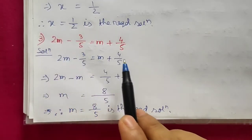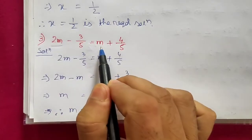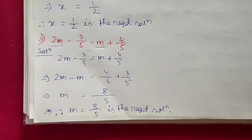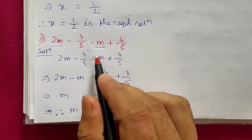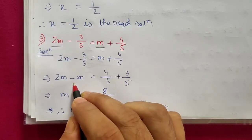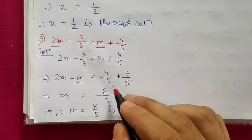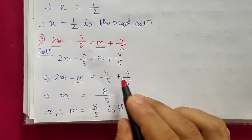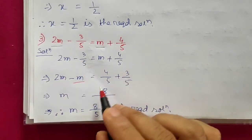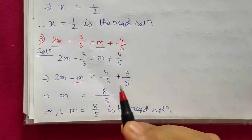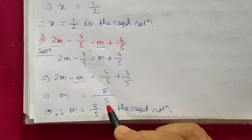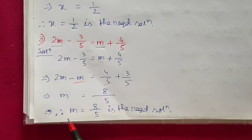Question 3: 2m minus 3/5 equals m plus 4. Transposing m to the left side gives 2m minus m. Transposing minus 3/5 to the right side gives plus 3/5. So m equals 4 plus 3/5. Using LCM of 5, this gives m equals 20/5 plus 3/5, which is 23/5. Wait — the result is m equals 8/5, hence m equals 8/5 is the required solution.